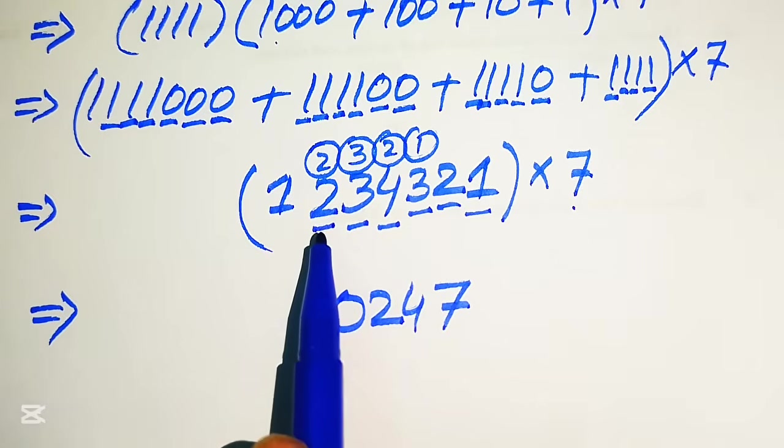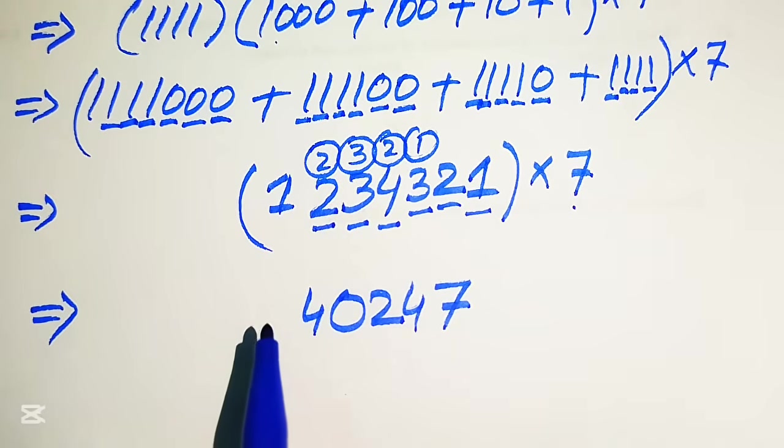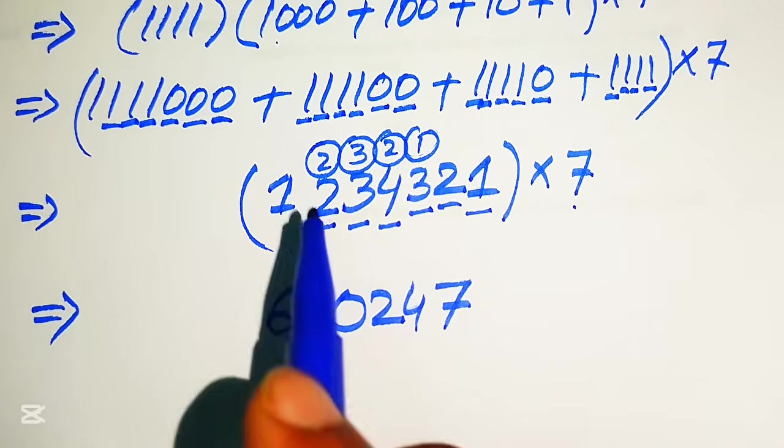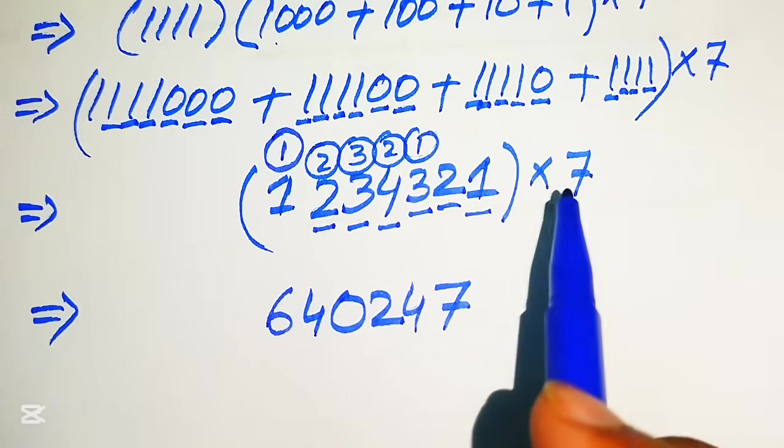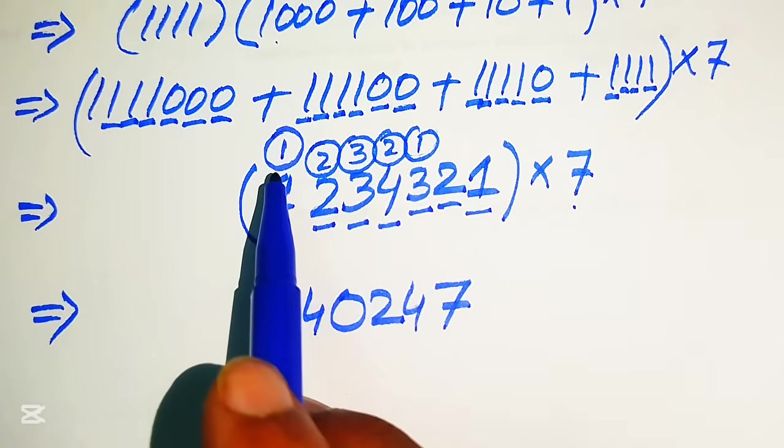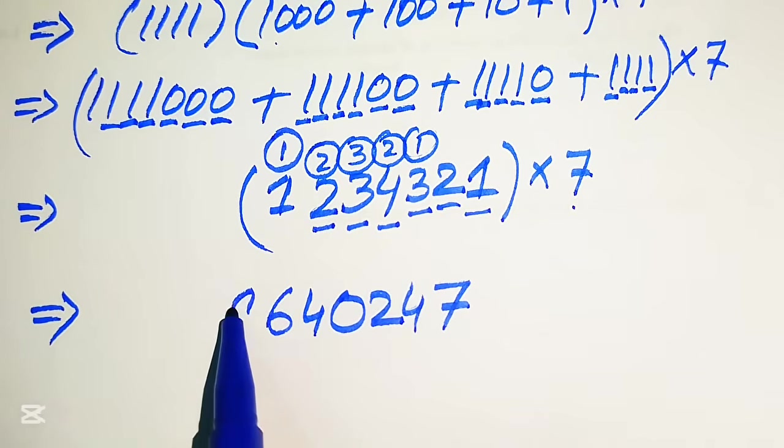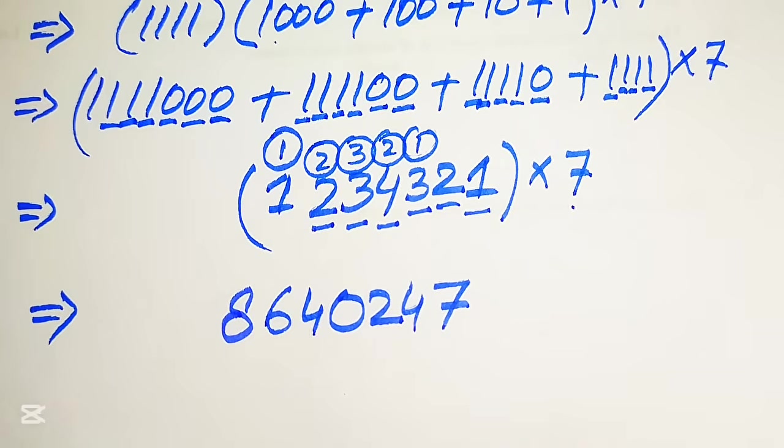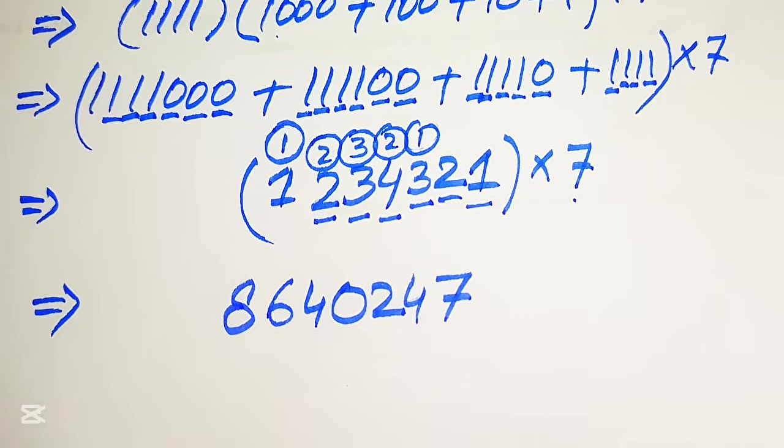And now in the next step we have 7 2s are 14. 14 plus 2 becomes here 16. We write 6 and carry 1. 7 1s are 7. 7 plus 1 equals to 8. This is the final simplified form of the given question.